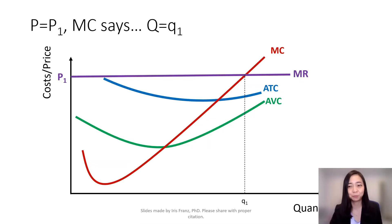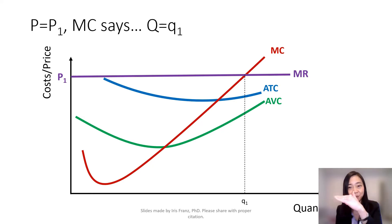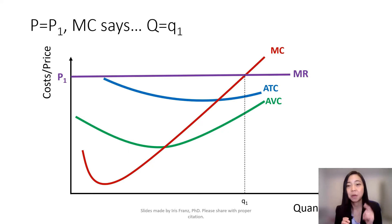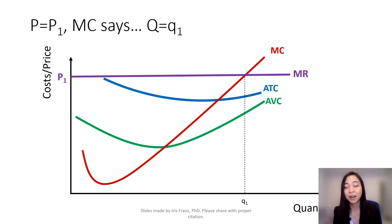Here the price is P1. So at the intersection of P1 and the marginal cost curve, the marginal cost curve will tell you: given the price is P1, you should produce Q1.